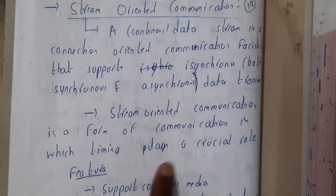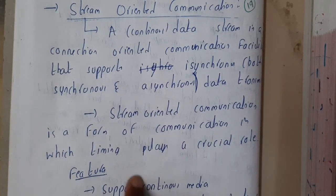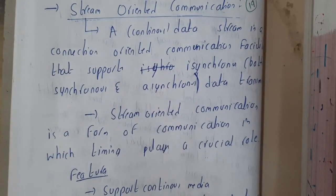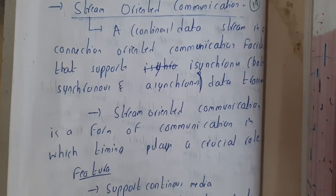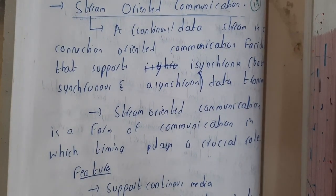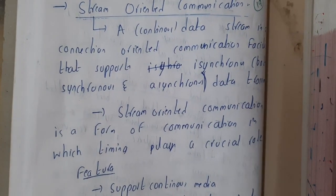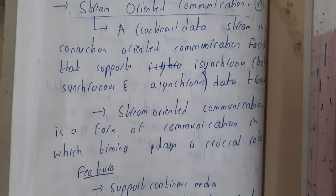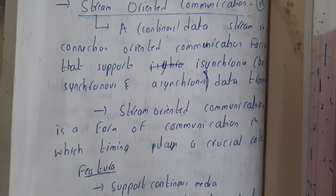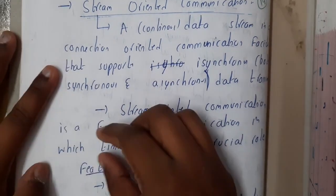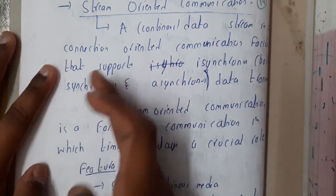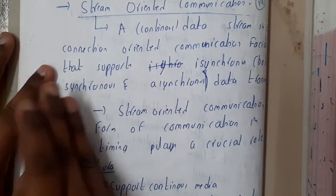Stream-oriented communication is a form of communication in which timing plays a crucial role. Basically, streaming — I hope everyone knows what streaming is. They will be streaming on YouTube or any kind of website, so live interaction between students or any kind of video is nothing but live streaming.